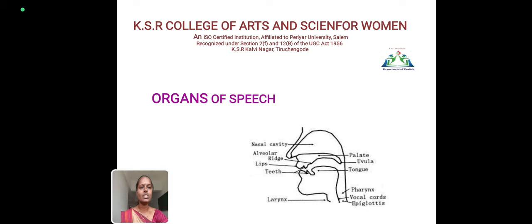The organs of speech include: the nasal cavity, alveolar ridge, lips, teeth, palate, uvula, tongue, larynx, pharynx, vocal cords, and epiglottis. These are the organs of speech.